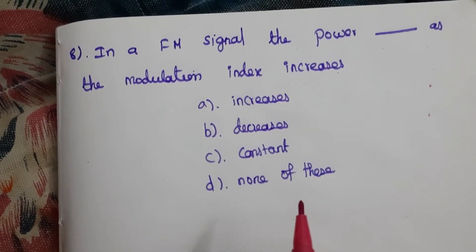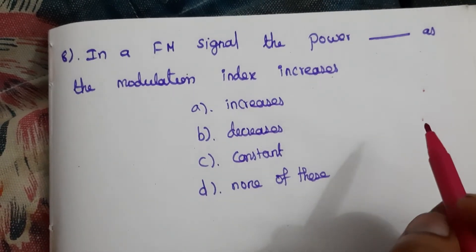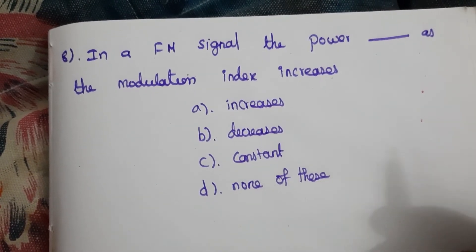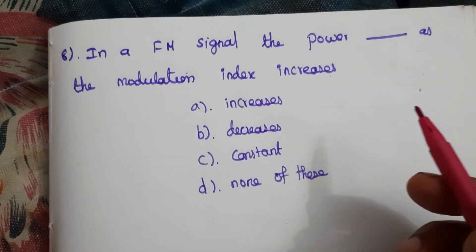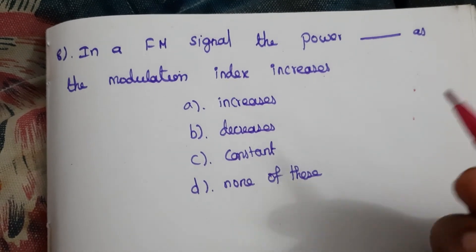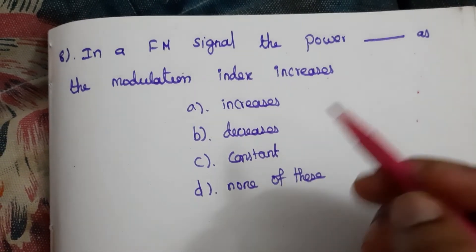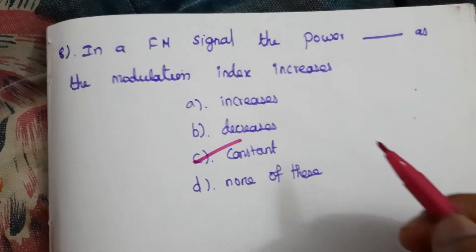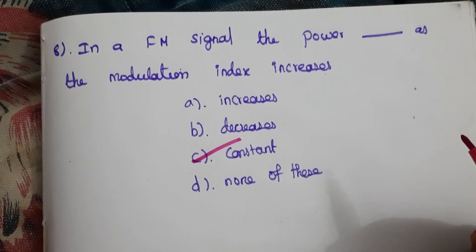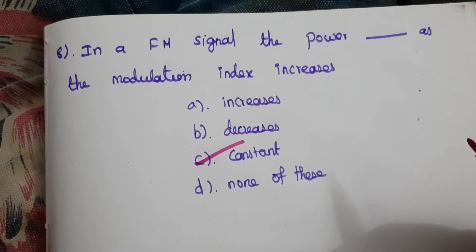Eighth question: In an FM signal, the power remains constant as the modulation index increases. Power is irrespective of the modulation index. The answer is C.